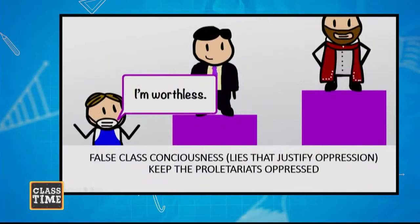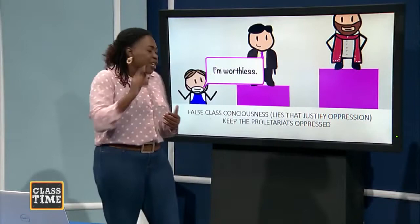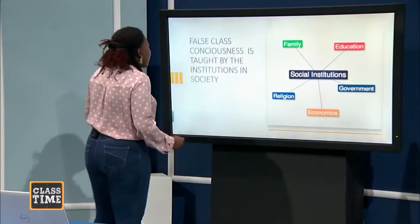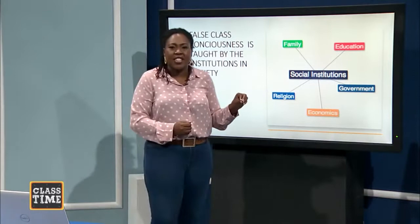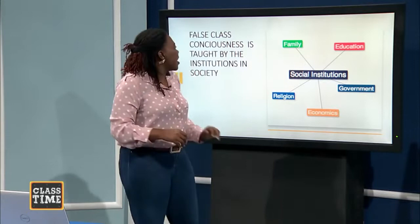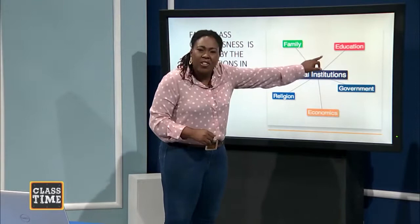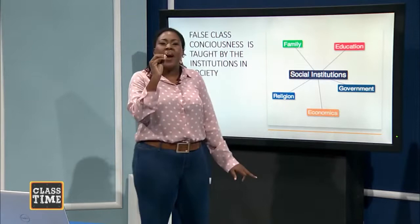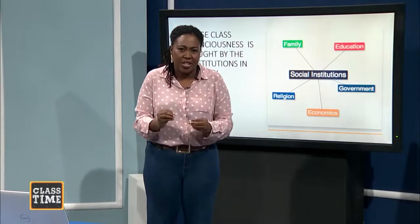The false class consciousness is a set of lies that justify the oppression. It keeps the proletariats oppressed because they believe the system is set. The false class consciousness is a set of lies that the bourgeois teach the proletariats. The bourgeois use the institutions to teach the false class consciousness — to teach the lies that justify oppression. Marx says the family teaches you the false class consciousness, the education system teaches it, and so does religion. Marx hates religion. Marx says religion is the major perpetrator of the false class consciousness.